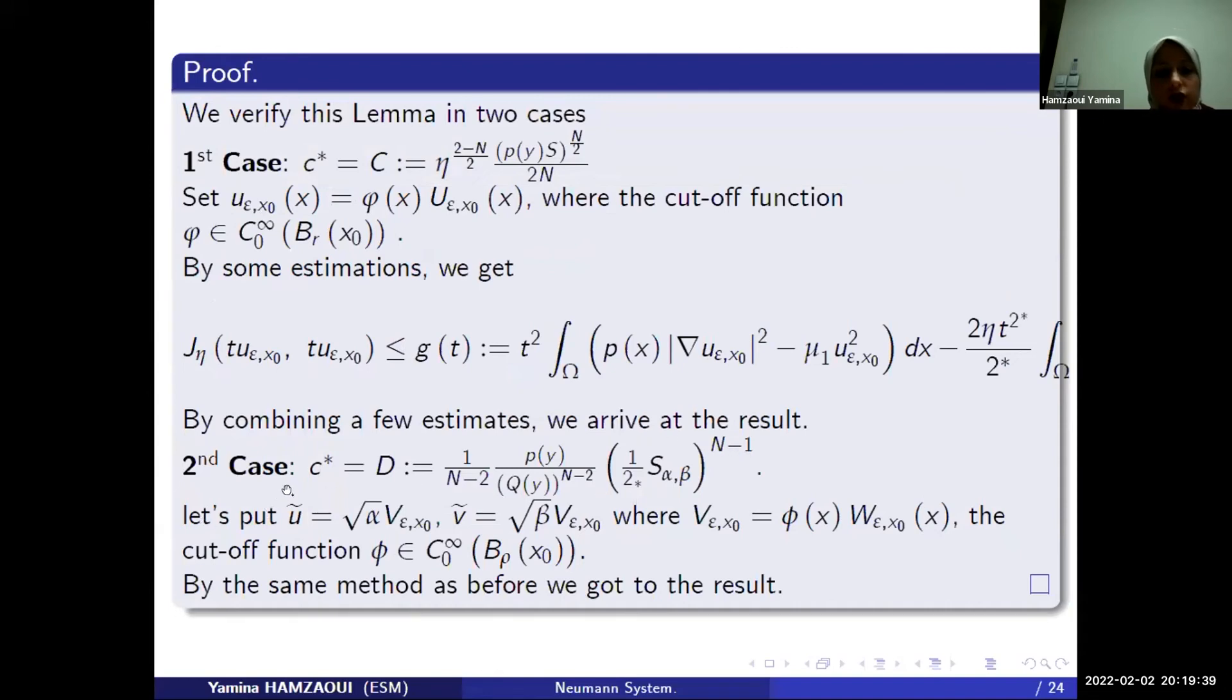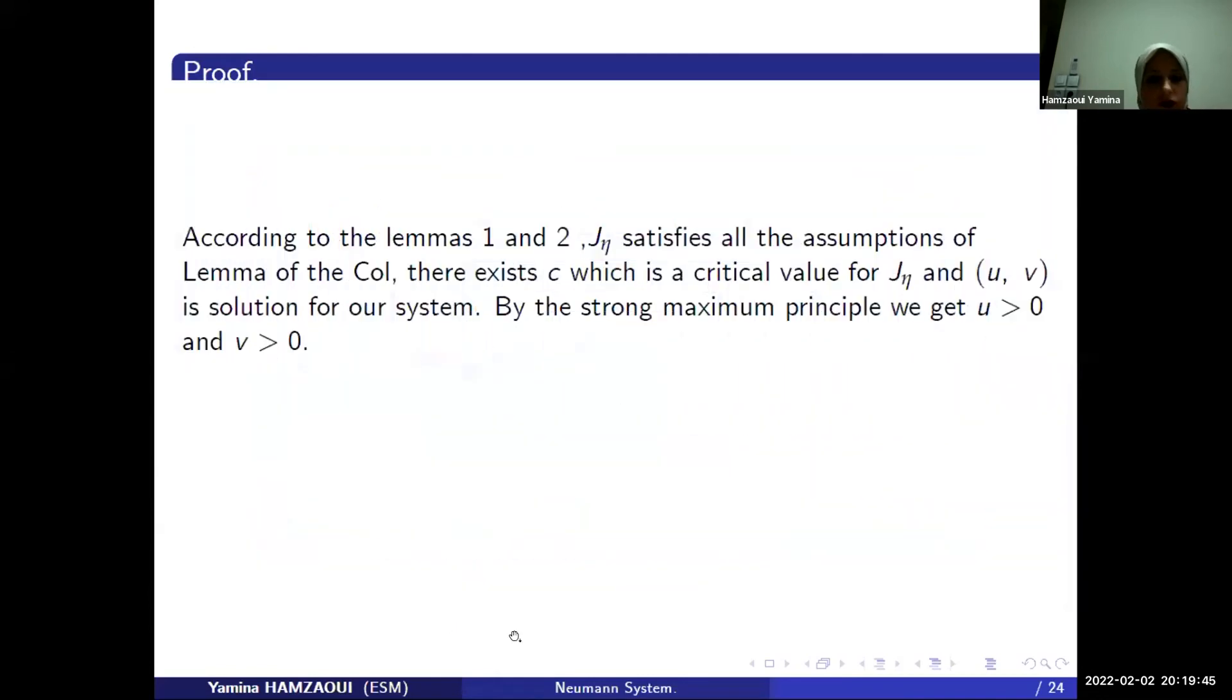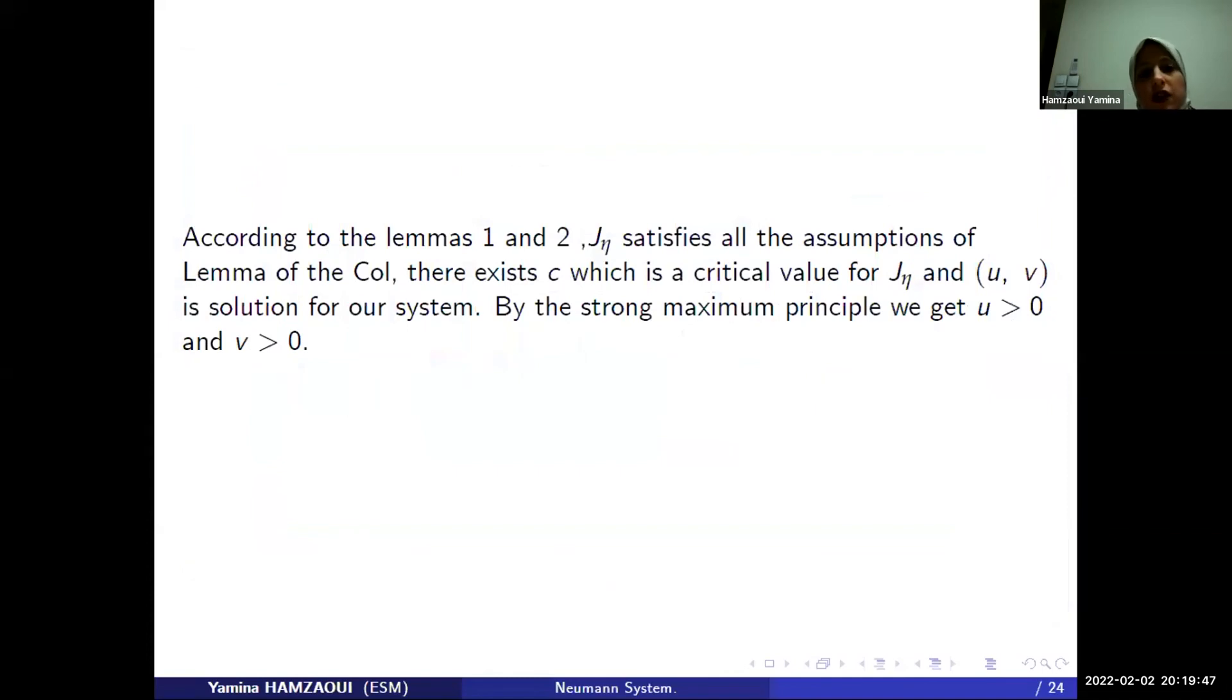For the second case, where C star equals D, by the same method as before, we got the result. According to the lemma 1 and 2, G eta satisfies all the assumption of lemma of Ambrosetti-Rabinowitz. There exists C, which is a critical value for G eta, and U, V is a solution for our system. By the strong maximum principle, we get the positivity of U and V.